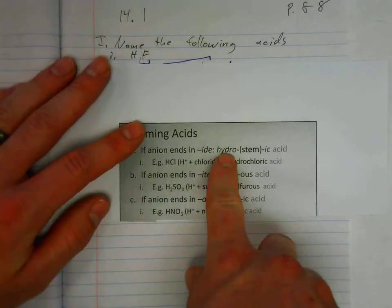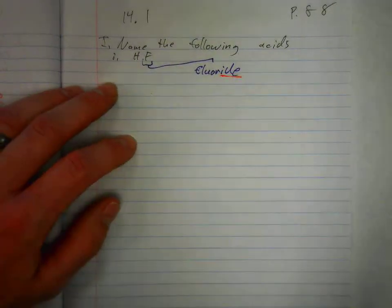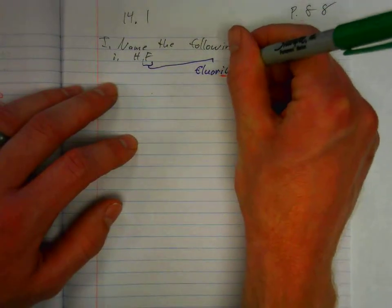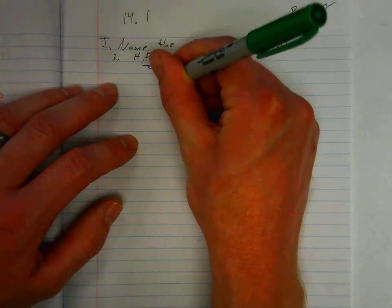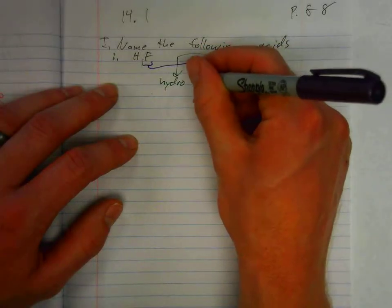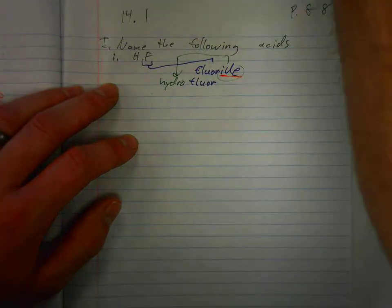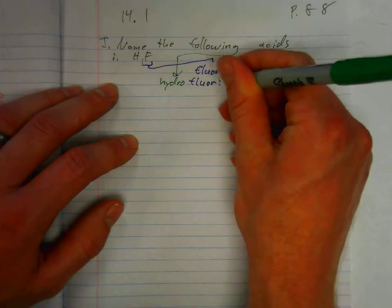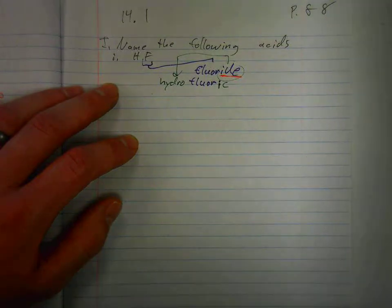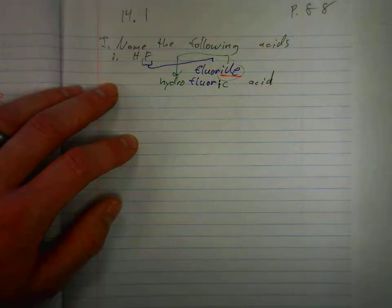We put the prefix hydro in front. The stem is the same. The suffix is IC followed by the word acid. Hydrofluoric acid.